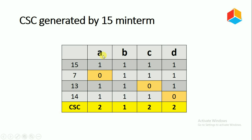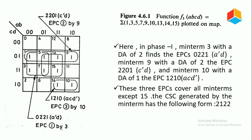Now, changing the variable position a from 1 to 0, we get (0, 1, 1, 1), which is nothing but 7. Changing the c variable from 1 to 0 gives 13. And changing the d variable from 1 to 0 gives 14. So the candidate solution cube generated by minterm 15 is (2, 1, 2, 2). In the K-map we consider minterms only, so the adjacent minterms for 15 are 7, 13, and 14.